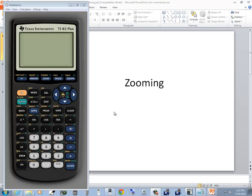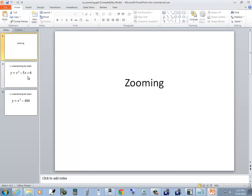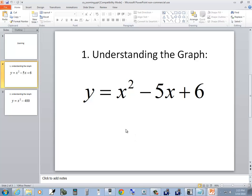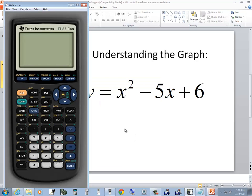Let's look at zooming on TI-83 Plus. First one we'll look at is y equals x squared minus 5x plus 6.